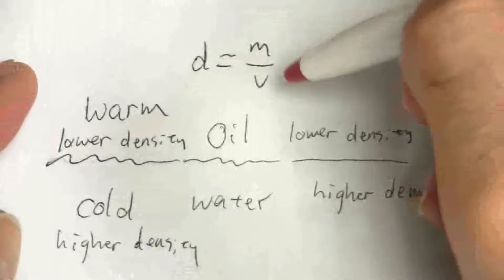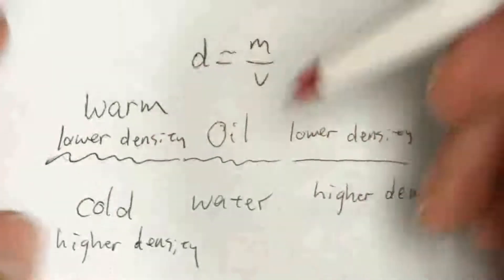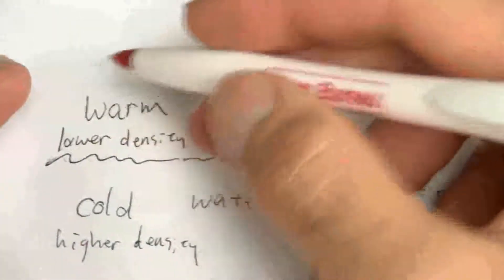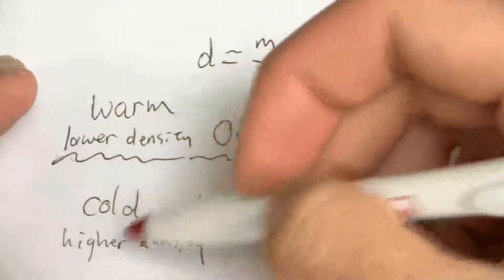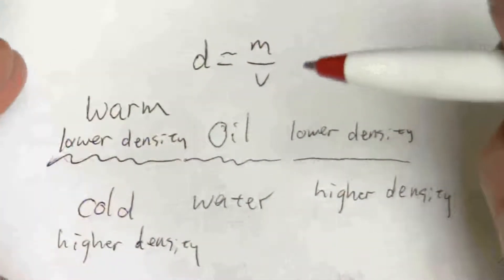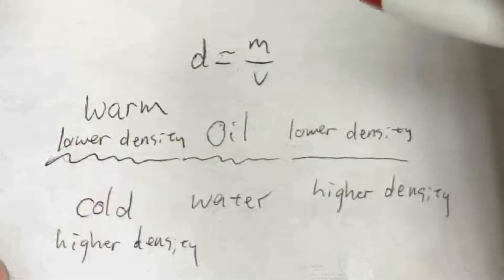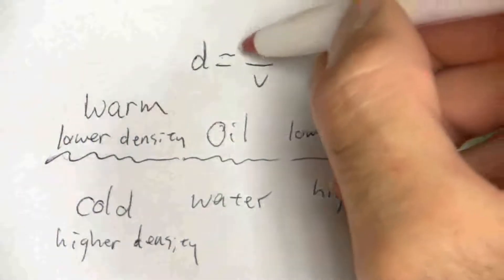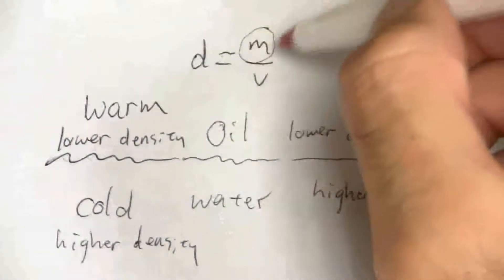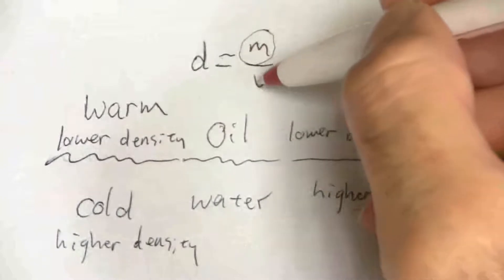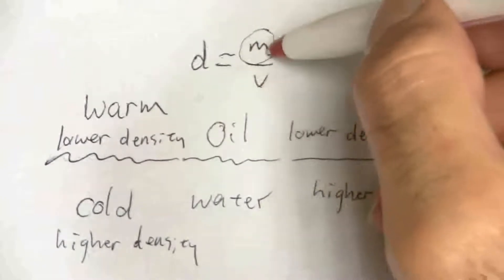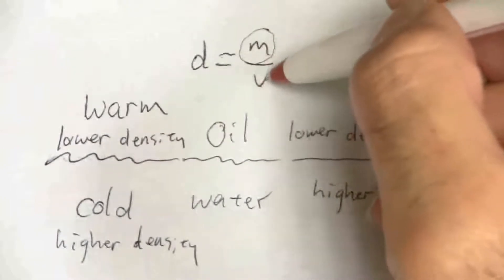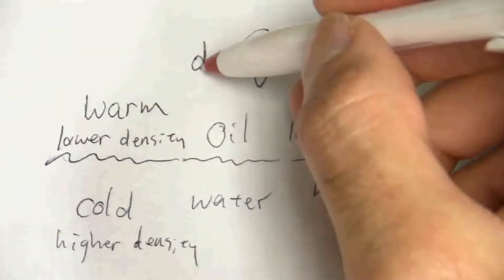So that means if I have the same mass of warm air as cold air, which one is going to have a larger volume? If I have a constant mass, mass divided by a larger volume will give me a lower density.